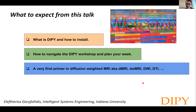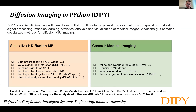Welcome to the workshop and thank you for joining. I hope you have a wonderful experience and learn many new things. Diffusion Imaging in Python, or DIPY, is a scientific image software library in Python. It contains general purpose methods for spatial normalization and signal processing. One very specialized part is diffusion MRI, but there is also a general part with broader scope — it's called its medical imaging limit.